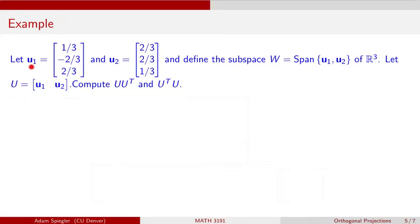Moreover, if I calculate the length of u1, you get 1. And if you calculate the length of u2, we also get 1. So u1 and u2 form an orthonormal basis for this subspace W, which is sitting in R³. Let's consider what happens when I construct a matrix U whose columns each consist of one of these vectors from this orthonormal basis — the first column is u1 and the second column is u2. The inner product of these two column vectors is 0, and the length of each is 1.